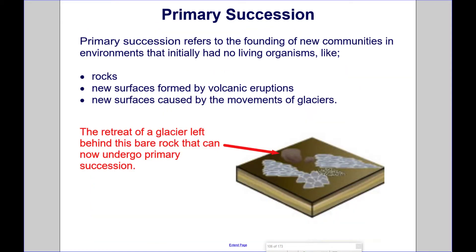Primary Succession refers to the founding of new communities in environments that initially had no living organisms, like rocks, new surfaces formed by volcanic eruptions, or new surfaces caused by the movements of glaciers. The retreat of a glacier left behind this bare rock that can now undergo primary succession.